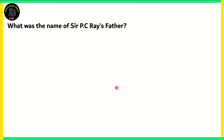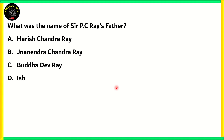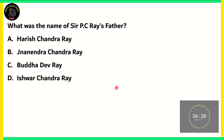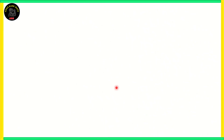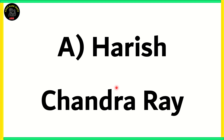Next question: What was the name of Sir P.C. Ray's father? A) Harish Chandra Ray, B) Gyanendra Chandra Ray, C) Buddha Dev Ray, or D) Jagadish Chandra Ray. The correct answer is A, Harish Chandra Ray. His father was a zamindar who appreciated education, supported learning, and had even set up a library at home. This is given in the second chapter of the same book.